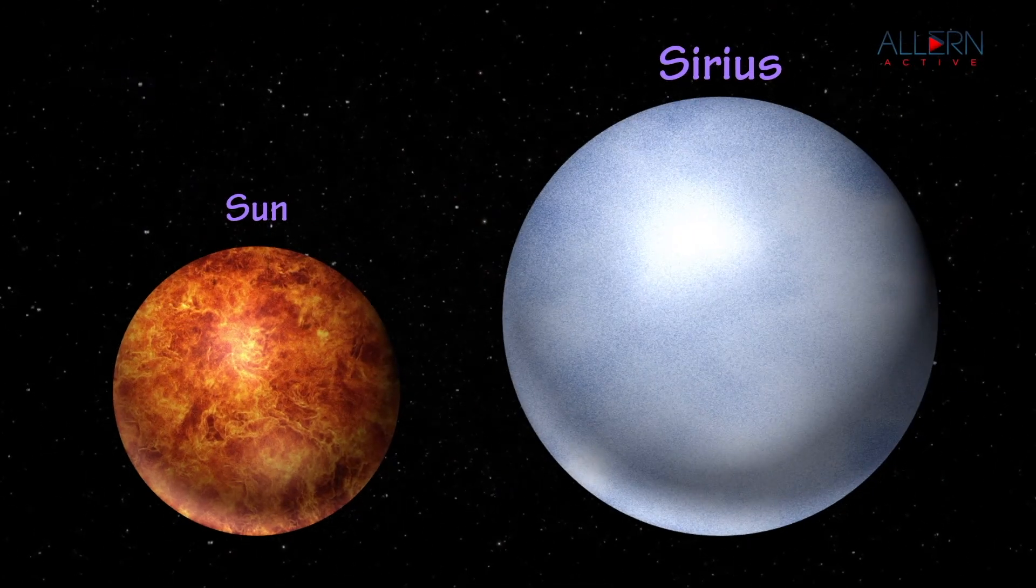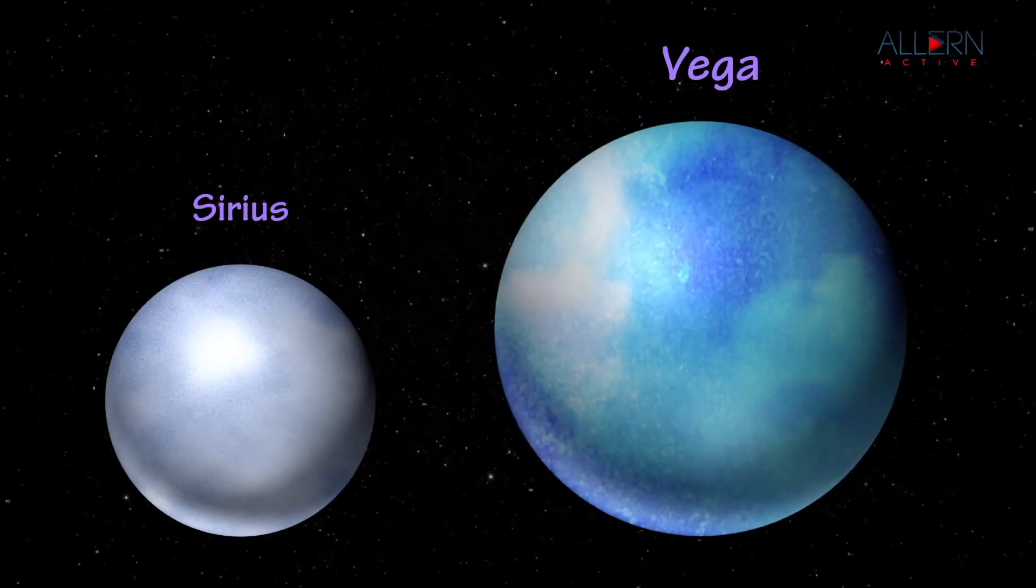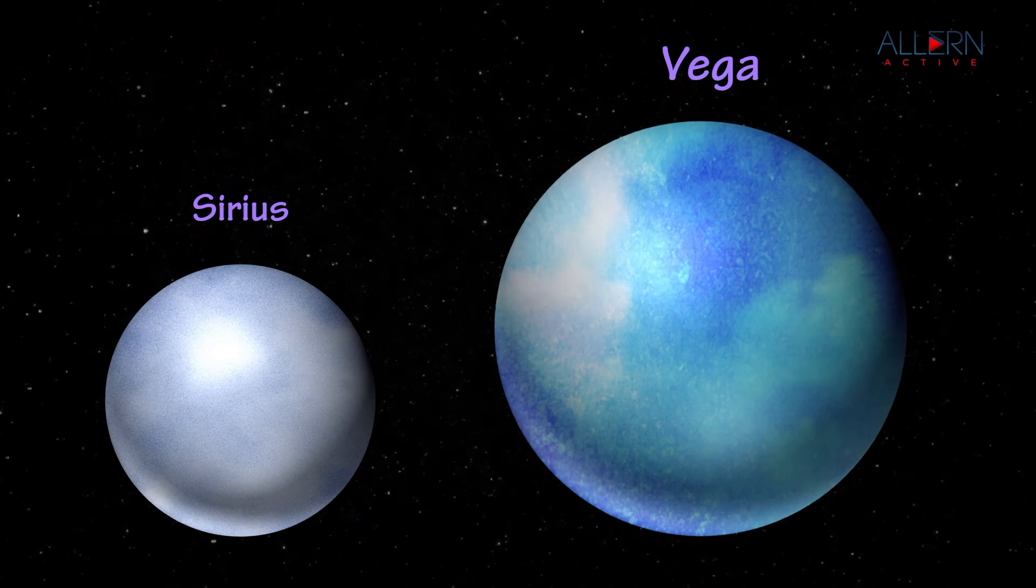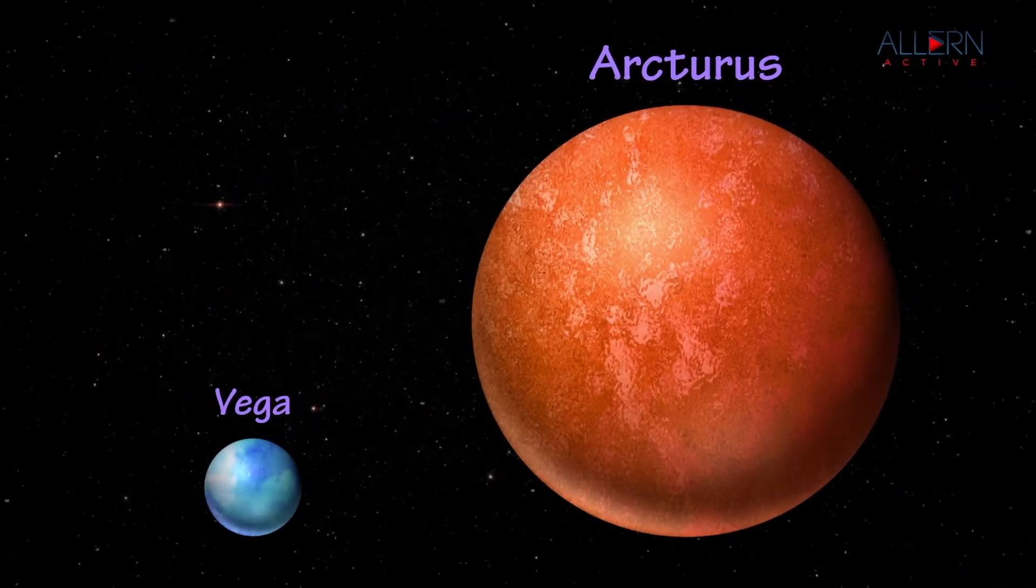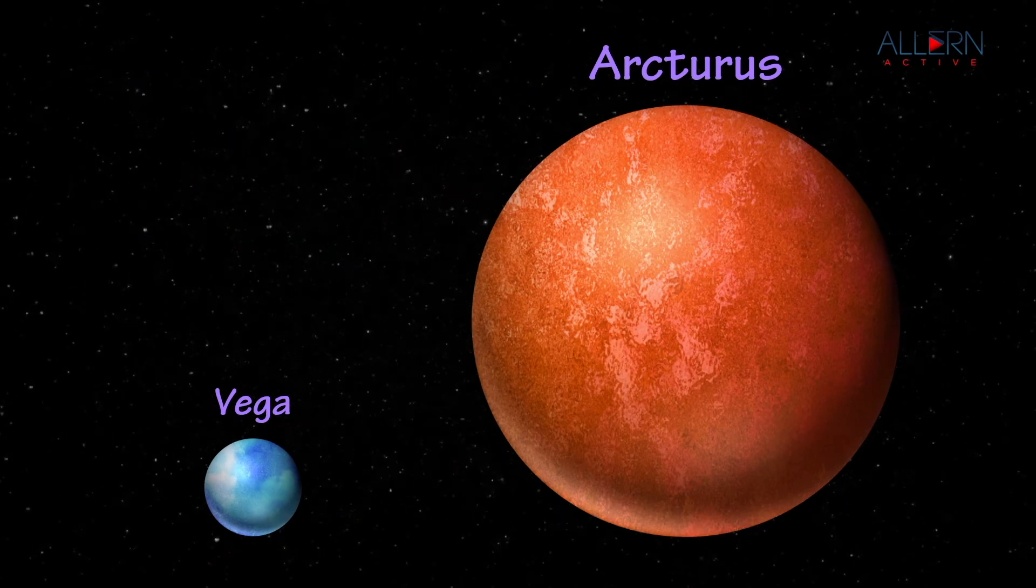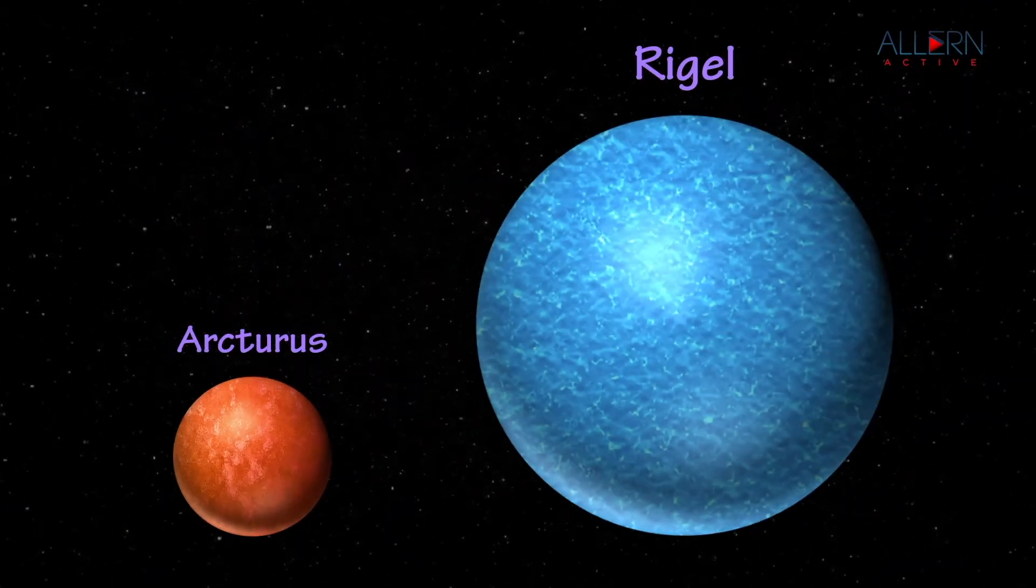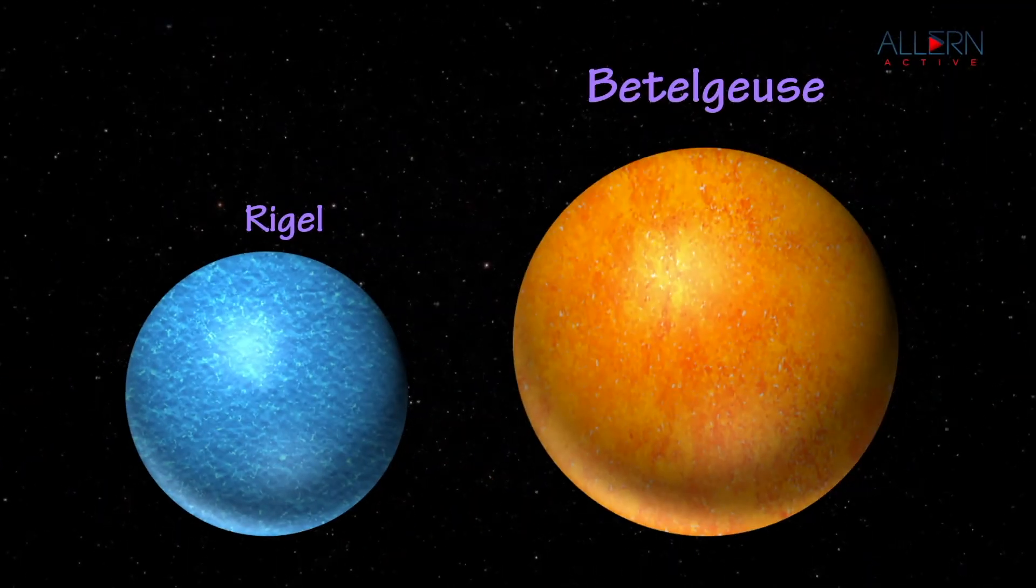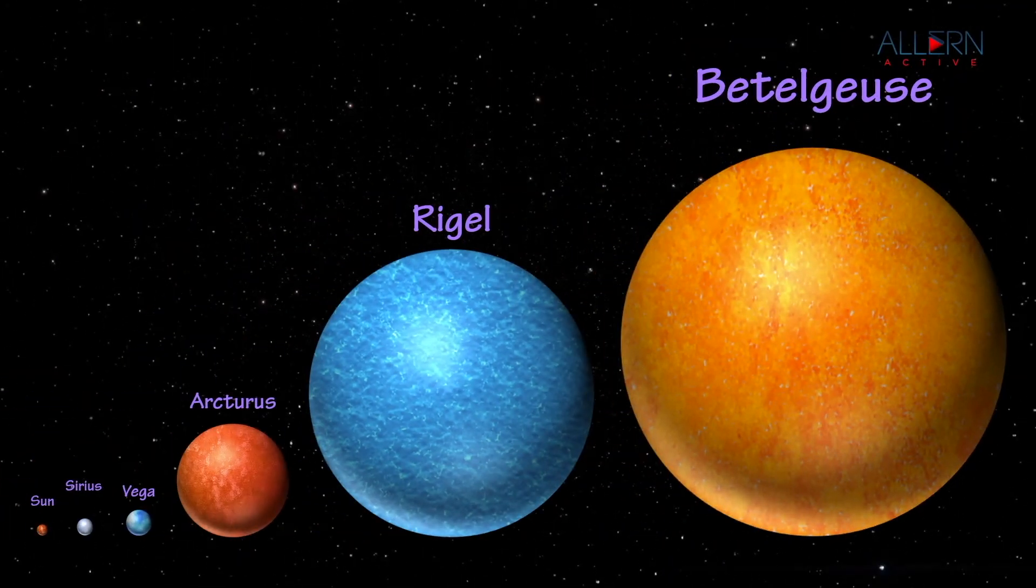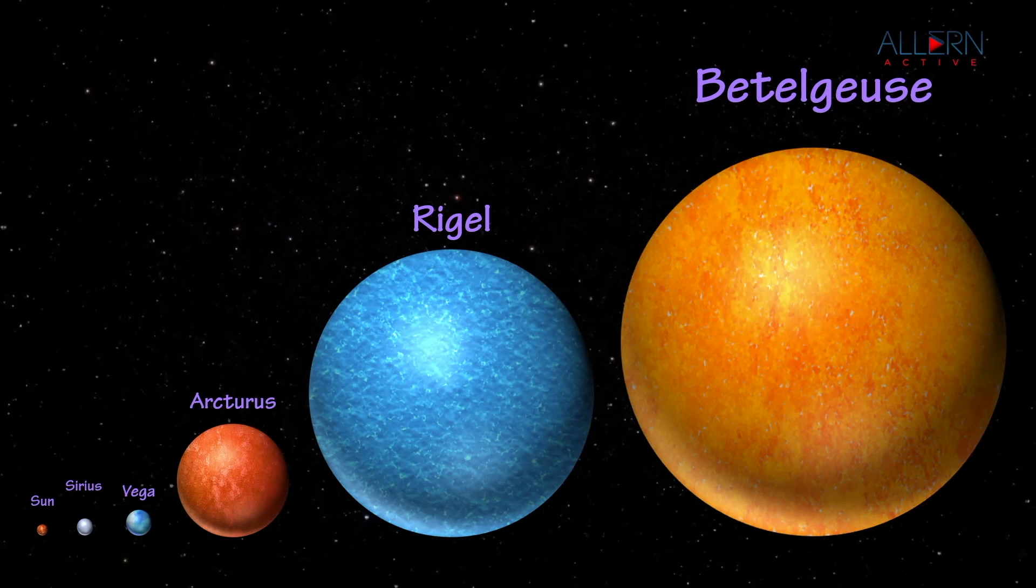We call Sun an ordinary star. The reason to call Sun an ordinary star is that even though it appears to be larger than all other stars in the sky because of its being nearest to us, there are billions of stars which have higher or lower mass, size, and temperature than those of the Sun.